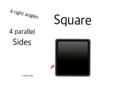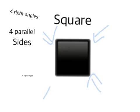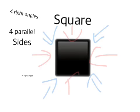This square has four pairs of parallel sides and four right angles. It has four vertices: one, two, three, and four. And it has four sides: one, two, three, and four.